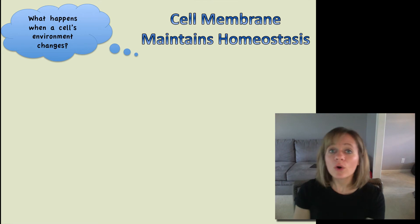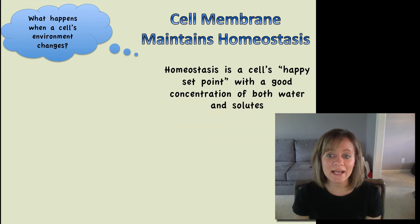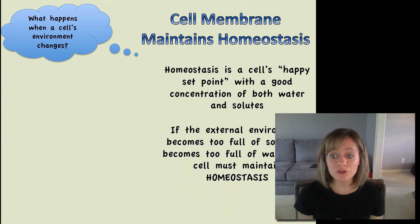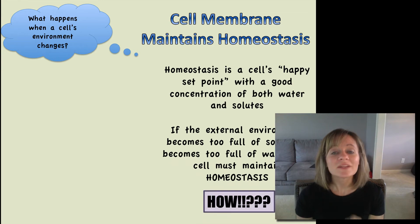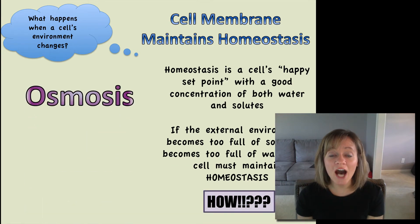What happens in a cell or if the cell's environment changes? How does the cell membrane continue to maintain homeostasis? Homeostasis is simply a cell's happy set point. This means that there's a good concentration of both water and solutes inside the cell and outside the cell. But you know what? The cell has to work to maintain this. The cell is always moving solutes and water across the membrane to maintain that homeostasis. So if the external environment becomes too full of solute or too full of water, the cell must somehow regulate that and maintain homeostasis. And how does it do it?